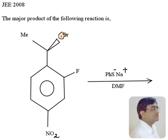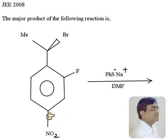We know that aryl halides do not like substitution as much as alkyl halides do. It is true that in the presence of a strong EWG we do have nucleophilic substitution taking place, but NO₂ should be at the ortho or para position preferably for such a reaction. Here you can see it is at the meta position, and therefore aryl nucleophilic substitution is not going to be favourable.